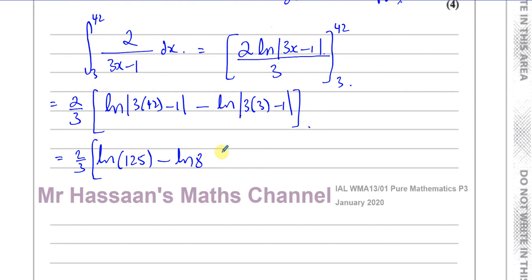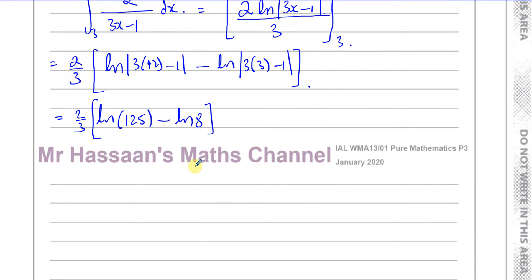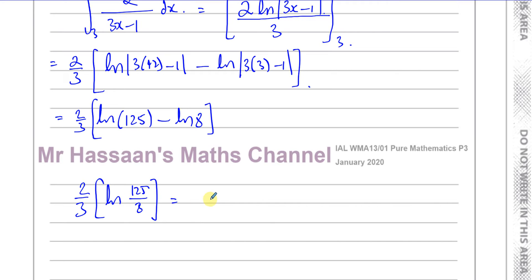Now I want to simplify this. I can write this as one expression: 2 thirds times ln of 125 divided by 8, using the subtraction law. And then I can rewrite this using the power law as ln of 125 over 8 to the power of 2 thirds.